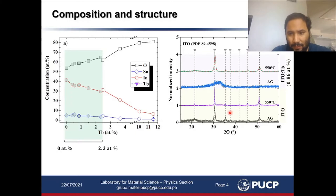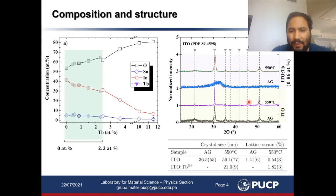After deposition, ITO films grown under these conditions exhibit a polycrystalline structure, whilst ITO doped with terbium exhibit an amorphous structure. After annealing, ITO films increase their grain size, whilst the terbium-doped version crystallized.